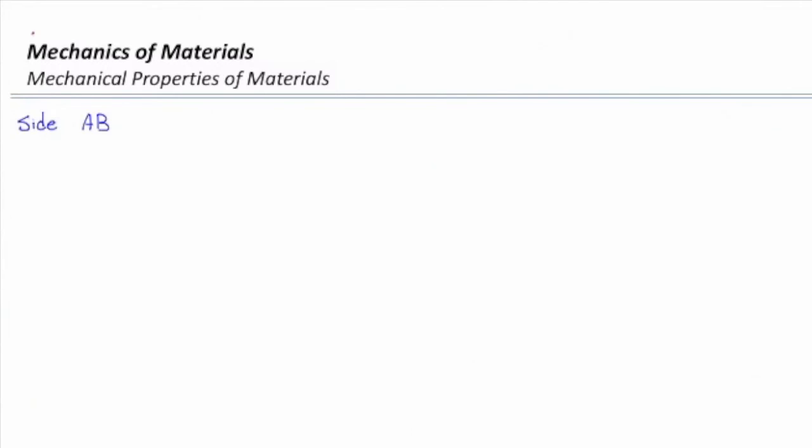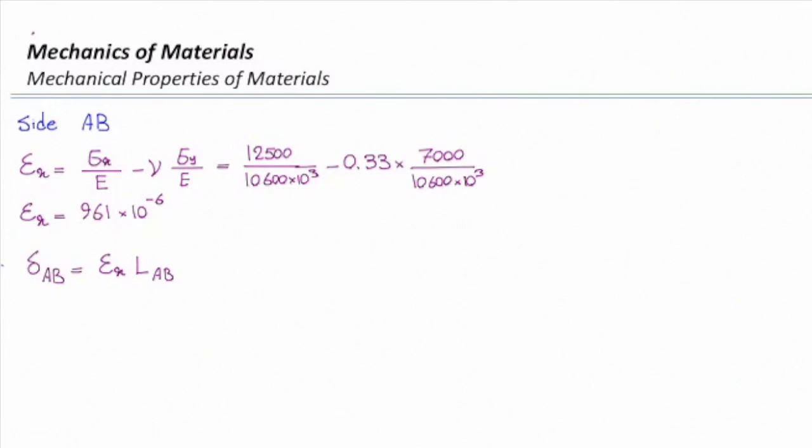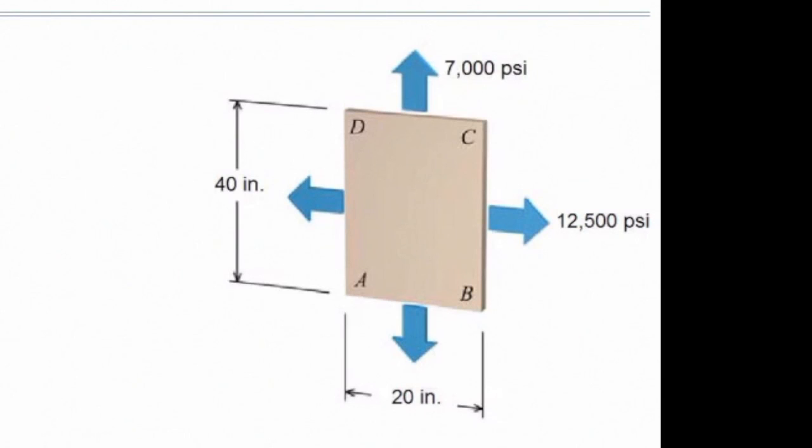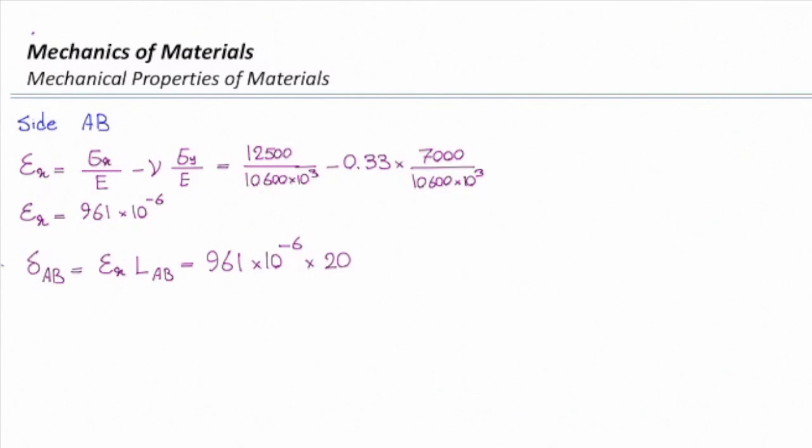On side AB, I'm following the same procedure. Epsilon X would be Sigma X over E minus ν times Sigma Y over E. I plug the values into this equation. That gives me Epsilon X equal to 961 times 10 to the minus 6. And I multiply that by the initial length in the X direction, which is 20 inches. So deformation would be 961 times 10 to the minus 6 times 20 inches. And that gives me 0.0192 inches. That is the change in the length in the AB direction.